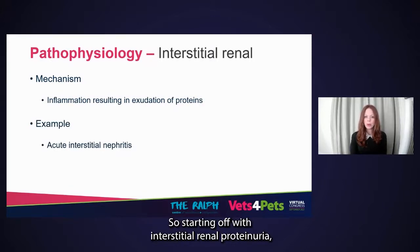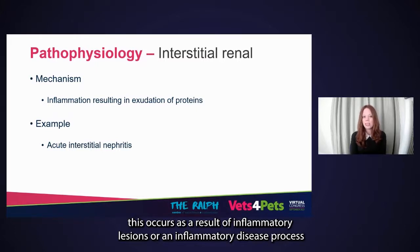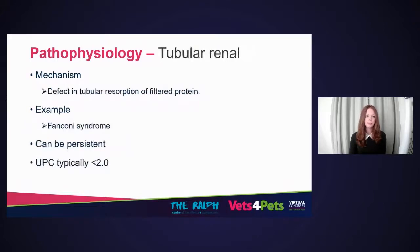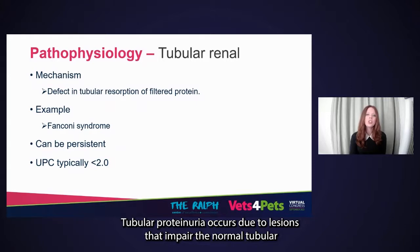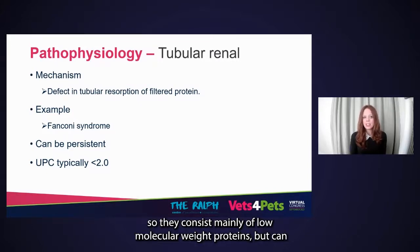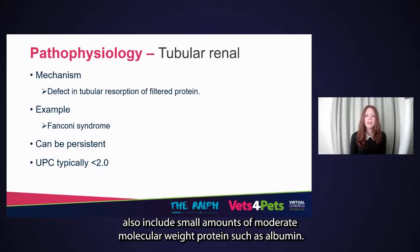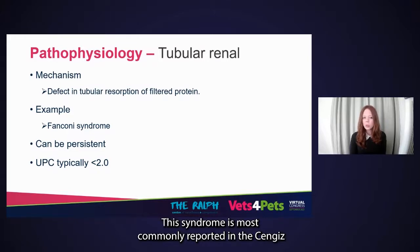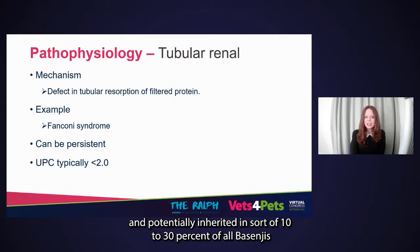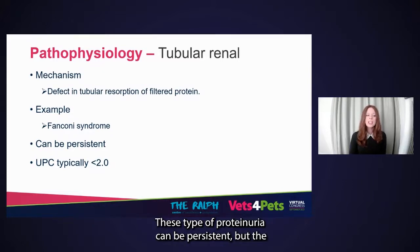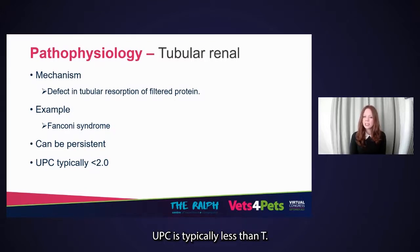Starting with interstitial renal proteinuria: this occurs as a result of inflammatory lesions where proteins are exudated into the urinary space — an example would be acute interstitial nephritis. Tubular proteinuria occurs due to lesions that impair normal tubular recovery of filtered plasma proteins. These consist mainly of low molecular weight proteins, but can also include small amounts of albumin. An example is Fanconi syndrome, most commonly reported in Basenjis and potentially inherited in 10 to 30% of all Basenjis. It consists of glucosuria, aminoaciduria, and phosphaturia. This type of proteinuria can be persistent, but the UPC is typically less than two.